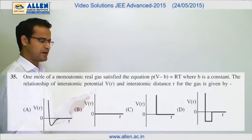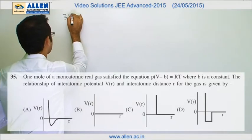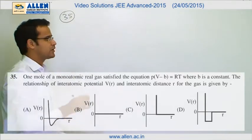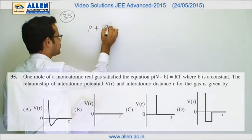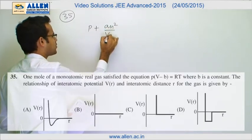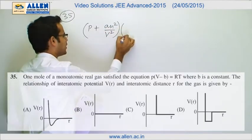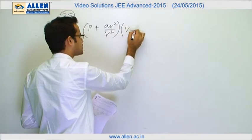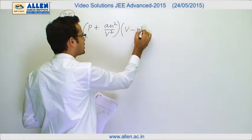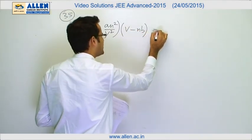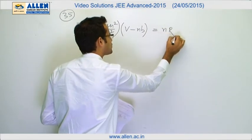Question number 35. Van der Waals equation, Van der Waals constant A and B. Van der Waals constant A represents attractive forces, and Van der Waals constant B represents repulsive forces.